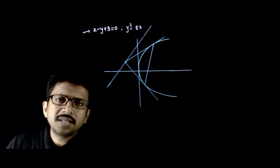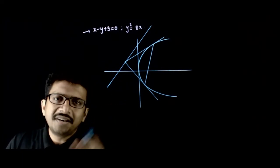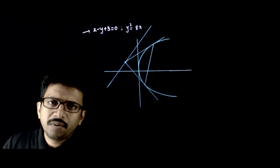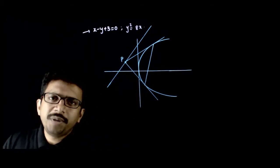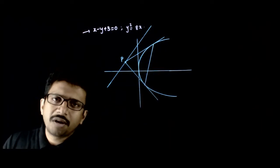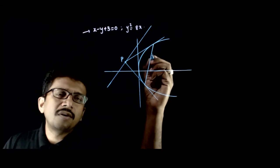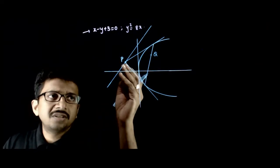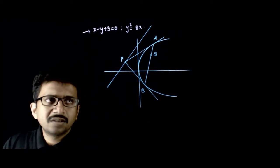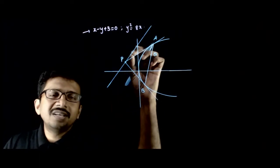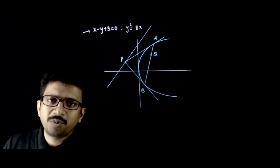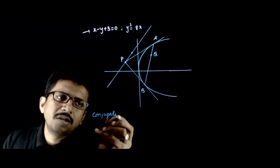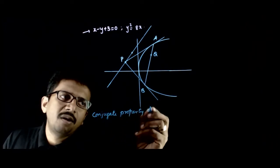Welcome students. In this question, we solve the previous case analytically. We have the line x - y + 3 = 0 and the parabola y² = 4x. Let us take an arbitrary point P on this line from which we draw the chord of contact. Let Q be the fixed point through which this chord of contact always passes, even as P changes. This can be solved using the conjugate property of the polar.